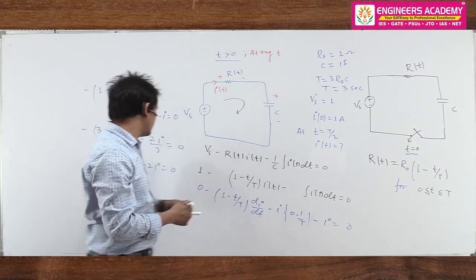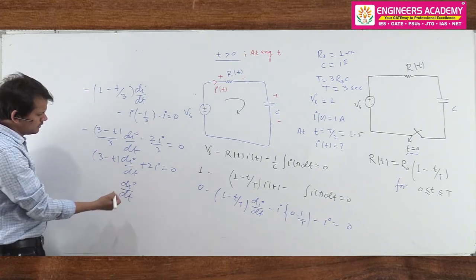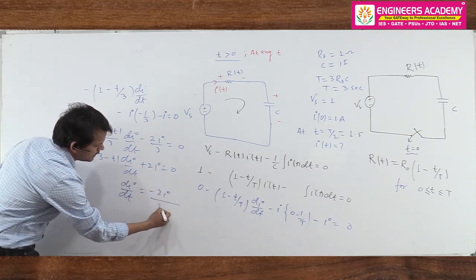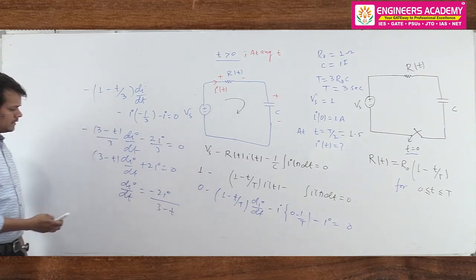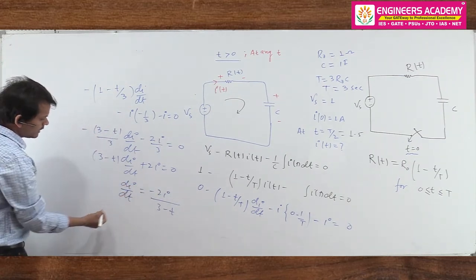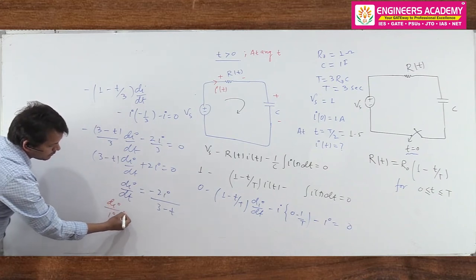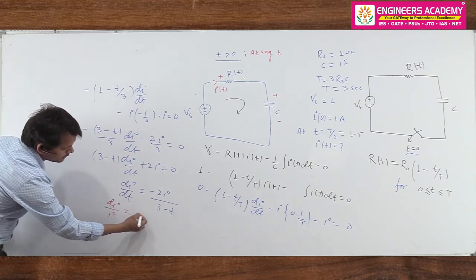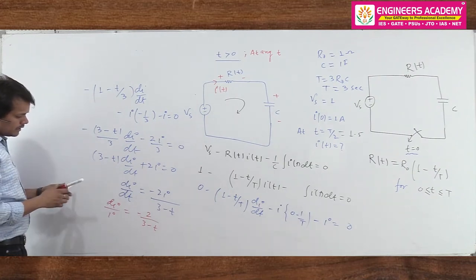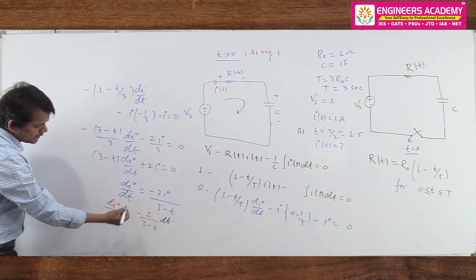To solve (3 - t)·dI/dt = -2I, we rearrange: dI/I = -2dt/(3 - t). This is the variable separable method. We separate variables and integrate both sides.